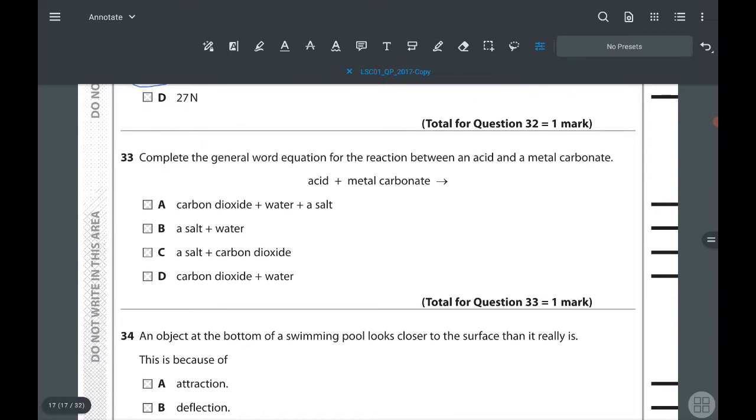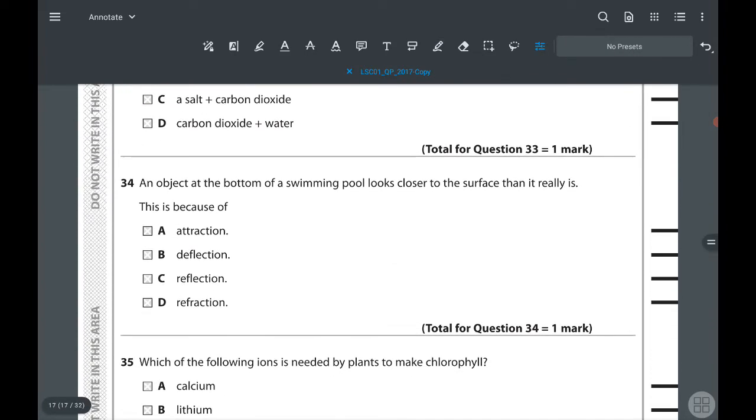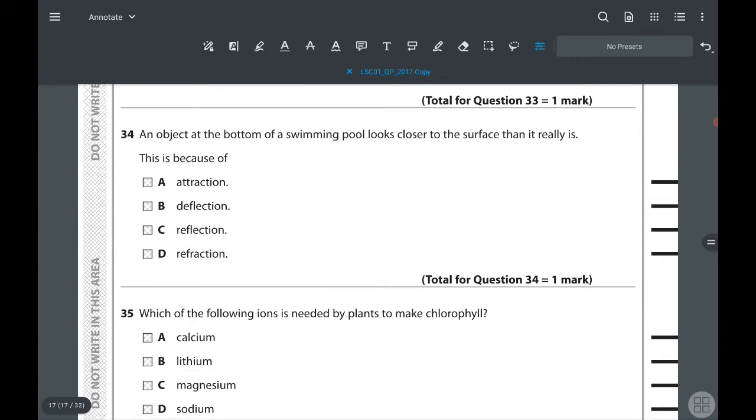Next question, 33: complete the general word equation for the reaction between acid and a metal carbonate. If it is a metal carbonate, we know that there will be carbon dioxide given out in addition to salt and water. So the answer has to be carbon dioxide plus water plus salt. 34: an object at the bottom of the swimming pool looks closer to the surface than it really is. This is because of the phenomenon called refraction.